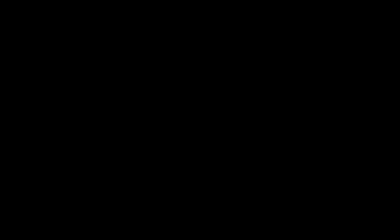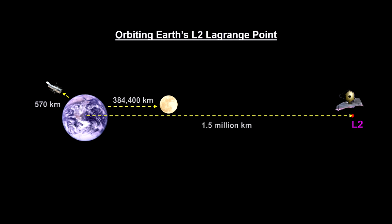Our space program takes advantage of these points when we position satellites to observe the Sun. Here we see that L2, where the James Webb Space Telescope will orbit, is four times further away from us than the Moon.